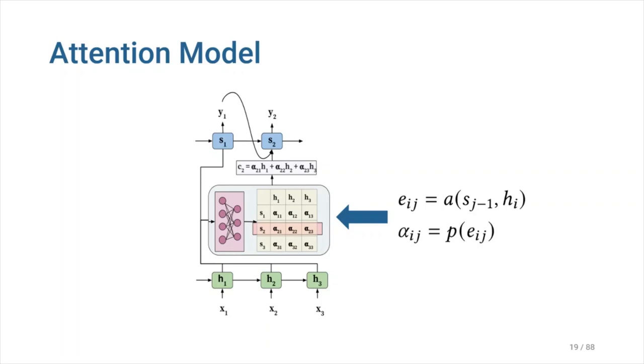These attention weights are then used for building a context vector ct, which is passed as an input to the decoder. At each decoding position j, the context vector cj is a weighted sum of all hidden states of the encoder and their corresponding attention weights. This additional context vector is the mechanism by which decoder can access the entire input sequence and also focus on the relevant positions in the input sequence.